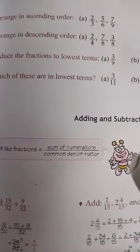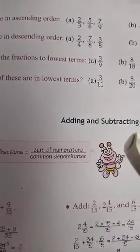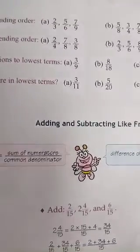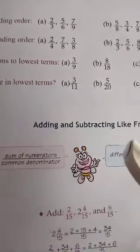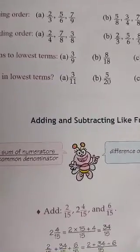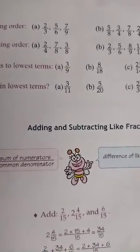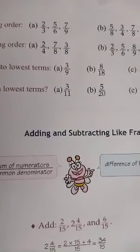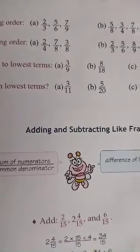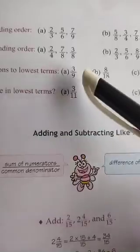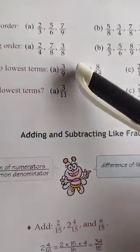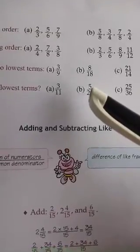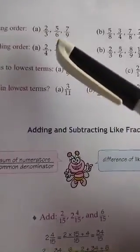Question number 11: arrange in ascending order. In this you have to arrange these fractions in ascending order. The very first step is you have to take the LCM of all the denominators. Denominators are 3, 6, and 9 — take the LCM of all three and you will get 18.